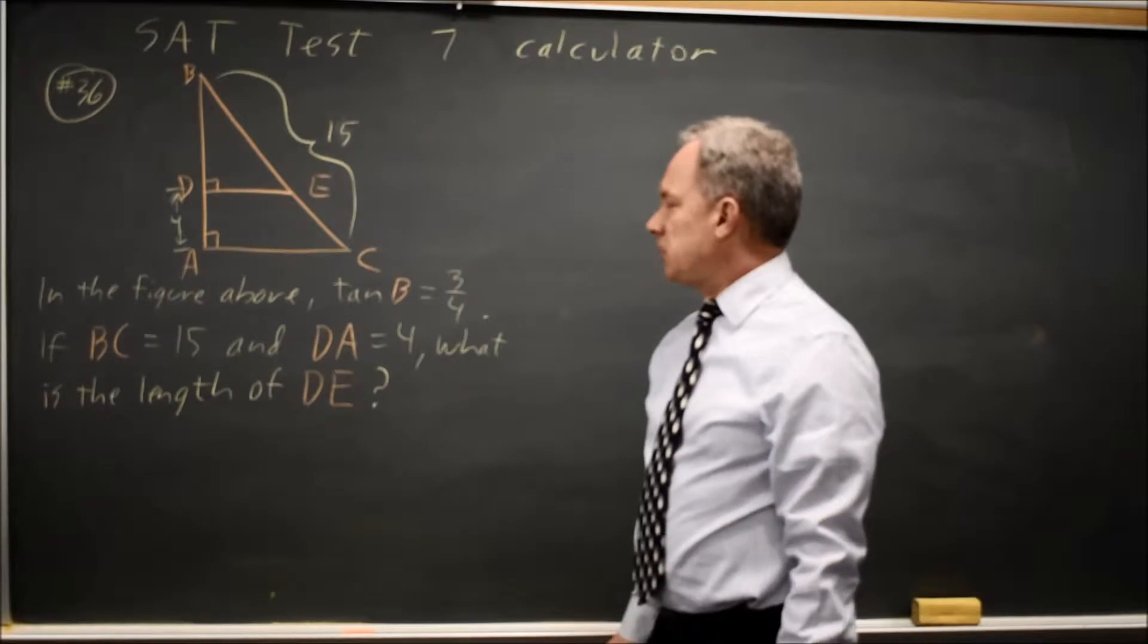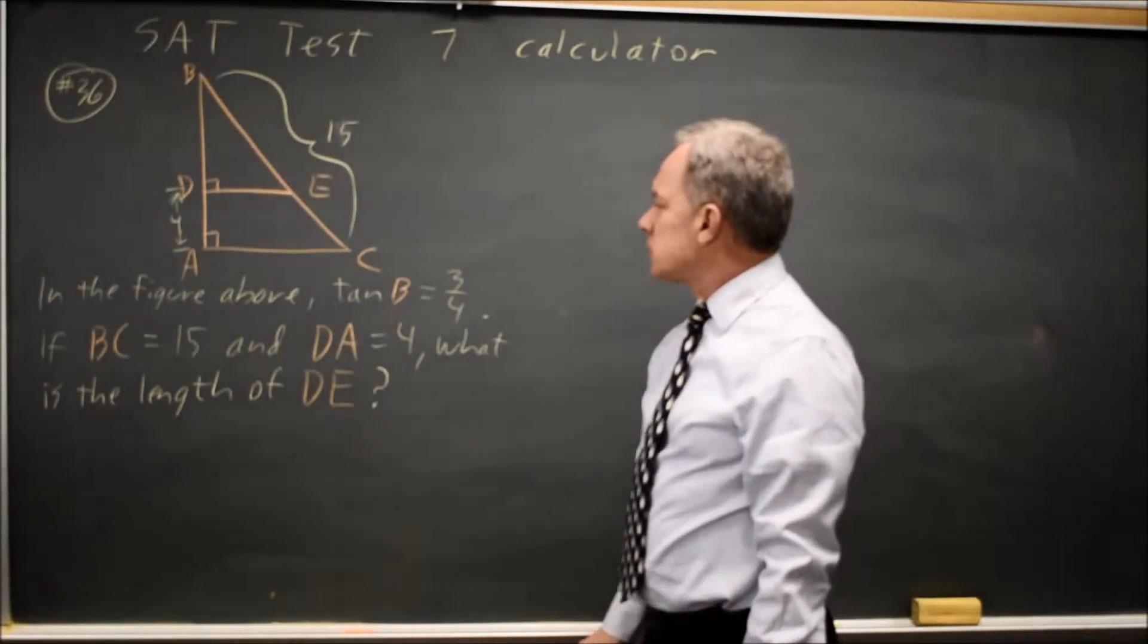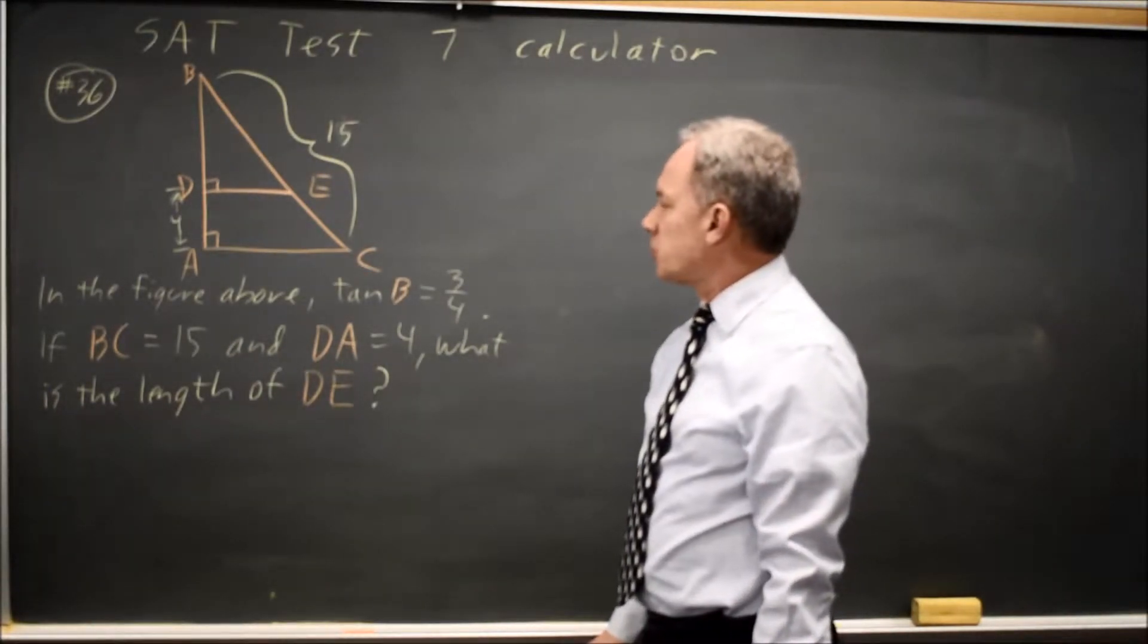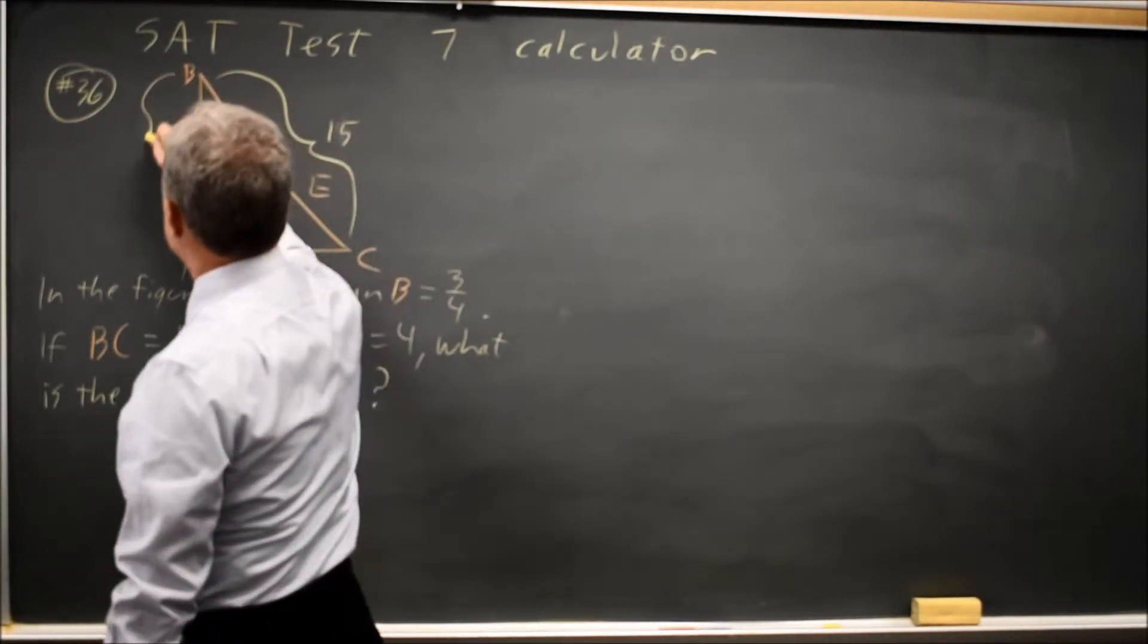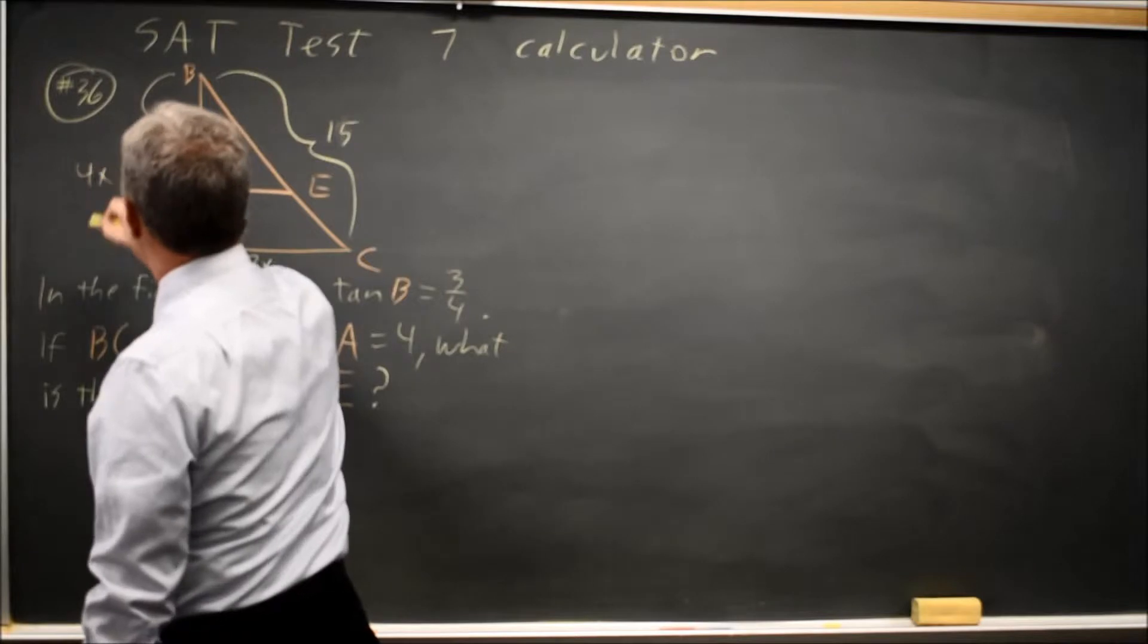what is the length of DE? Since the tangent of angle B is 3 over 4, side AC I'm going to call 3X, and side AB I'm going to call 4X.